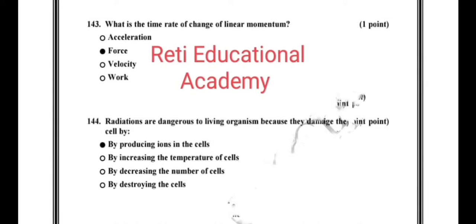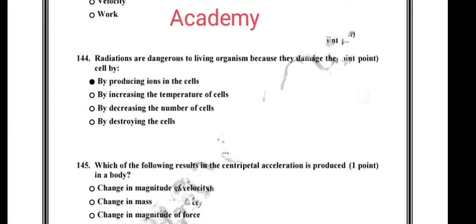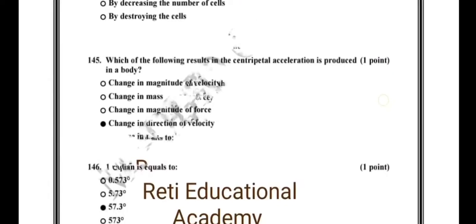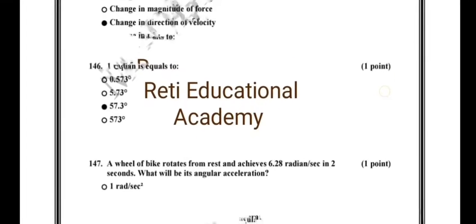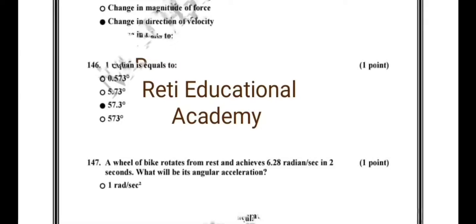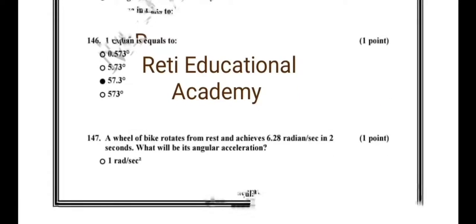Question number 144: radiations are dangerous to living organisms because they damage the cell by producing ions in the cells. Question number 145: which of the following results in centripetal acceleration being produced in a body? The correct option is change in direction of velocity. Question number 146: one radian is equal to 57.3 degrees.